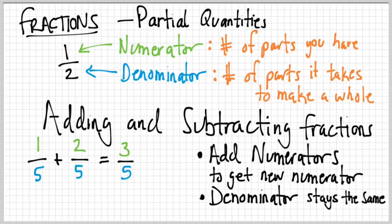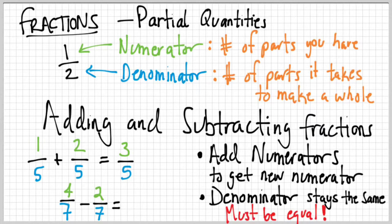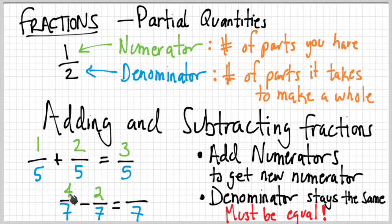That works if the two denominators are the same. If they're not, you have a problem — the denominators must be the same. We'll look in a second at how to make them the same. But first, a quick subtraction: adding and subtracting work very similarly. Instead of adding the numerators you subtract them, so four minus two is two, and the denominators stay the same. Four-sevenths minus two-sevenths is two-sevenths.